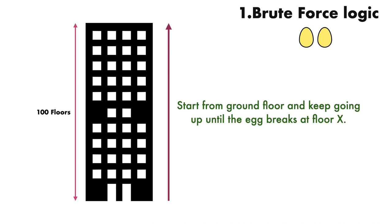But in our worst case scenario, the egg breaks at floor 100. This means that linearly our worst case is 100 drops to find our nth floor. This is called brute force logic. In this approach, start from the ground floor and keep going up until the egg breaks at floor x. This solution is very inefficient in case the egg doesn't break till the 99th floor. Remember, you need to minimize the number of drops in the worst case.